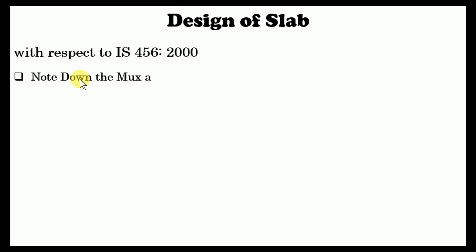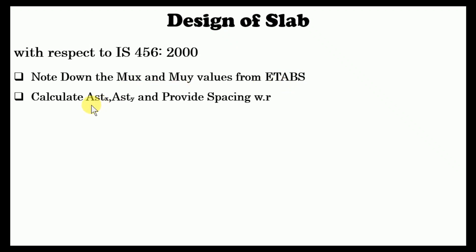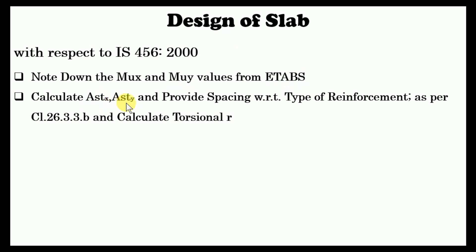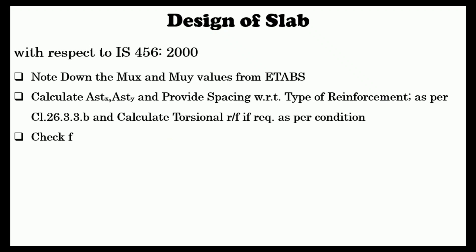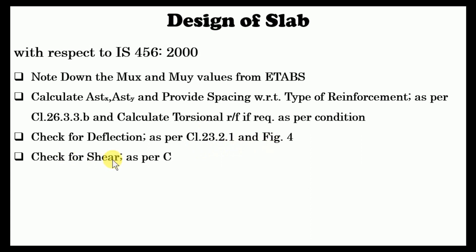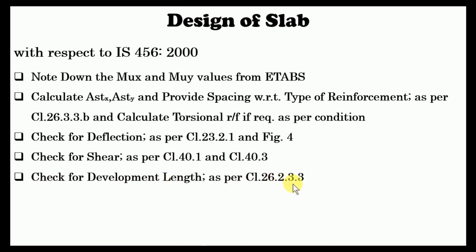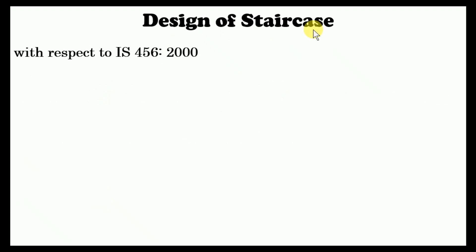For design of slabs following IS 456-2000, first note MUX and MUY values from ETABS. Calculate area of steel required in the X and Y directions as per Annex G, and check against minimum steel per codal provisions. Check torsional reinforcement requirement based on slab conditions. Apply checks for deflection as per clause 23.2.1 and Figure 4, shear as per clauses 40.1 and 40.3, and development length as per clause 26.2.3.3 of IS 456-2000. Finally, detail the slab.